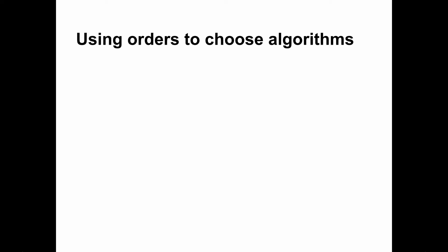If we know the running time functions for two different algorithms for the same task, which one should we choose? Easy. The lower order is better.